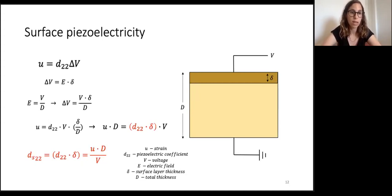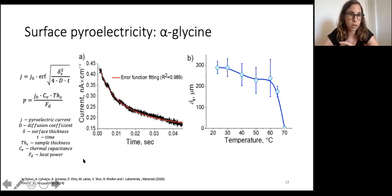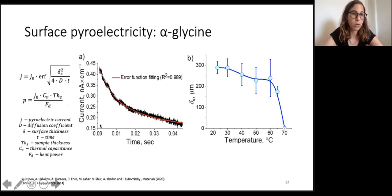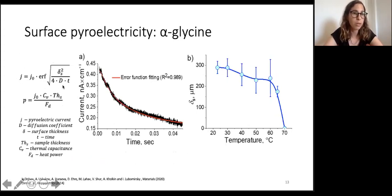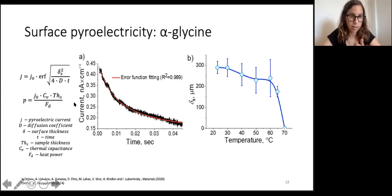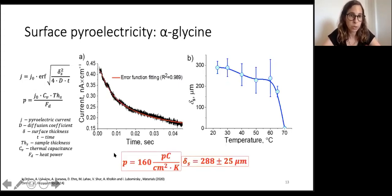From the previous work on surface pyroelectricity of alpha glycine, the surface layer thickness was estimated from theoretical calculations rather than experiment. We wanted to determine it experimentally. We used the pyroelectric current and looked at its decay with time, then fitted this to a function based on the diffusion equation. From this fitting we obtained delta_s (the surface layer thickness) and j_0 (the pyroelectric current), from which we calculated the pyroelectric coefficient.